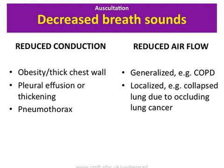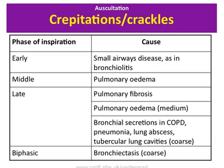Crackles or crepitations are non-musical intermittent sounds created when alveoli and small airways open or close during respiration. Note when the crackles occur within the respiratory cycle. Early inspiratory crackles suggest small airways disease and can occur in bronchiolitis. In pulmonary oedema, crackles occur in mid-inspiration. Fine late inspiratory crackles, which sound similar to rubbing hair between your fingers, are characteristic of pulmonary fibrosis. Bronchiectasis causes crackles throughout inspiration and expiration.